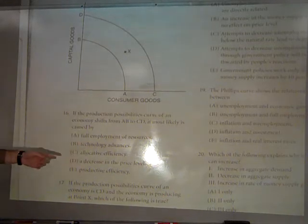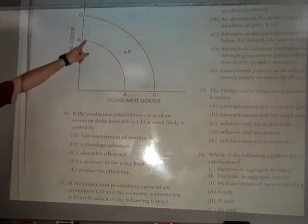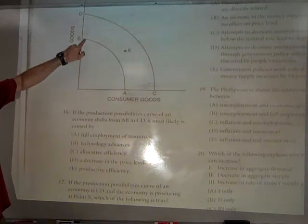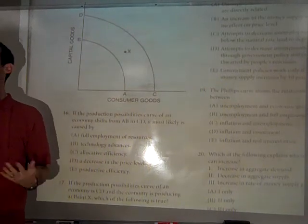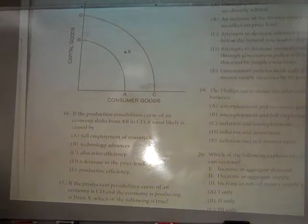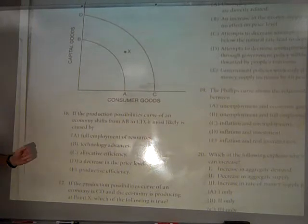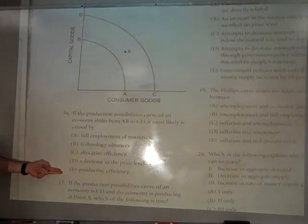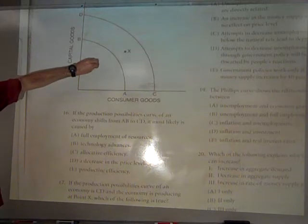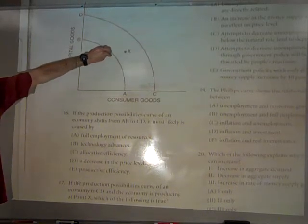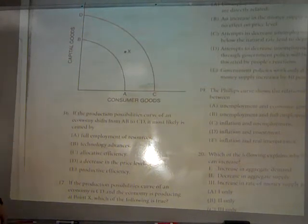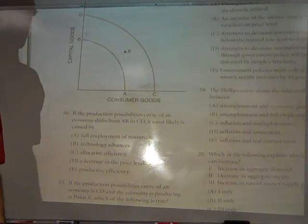Technology advances could cause that. I like B. Allocative efficiency is picking the right mix along the curve. A decrease in the price level would not cause this. Productive efficiency is the idea of using your resources efficiently. If you're doing that, you're on the curve. If you're not, you're inside the curve. So it's got to be B.